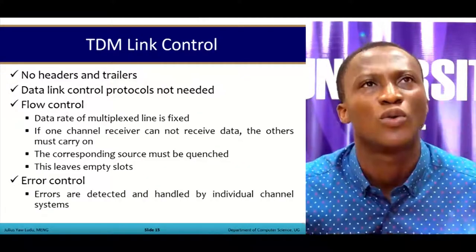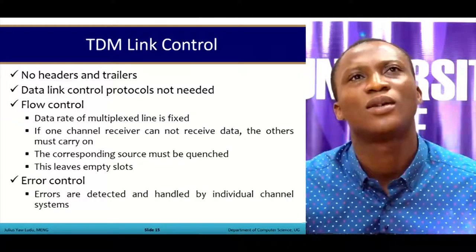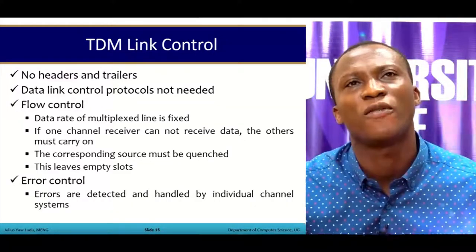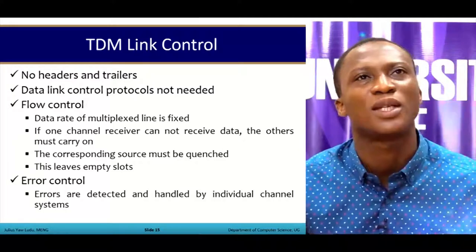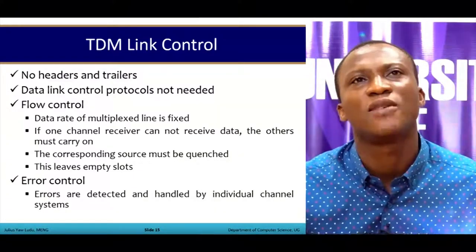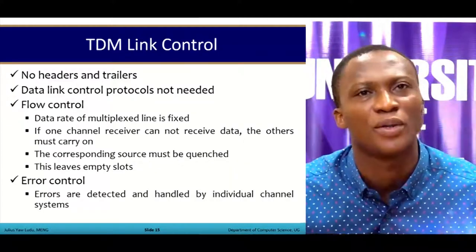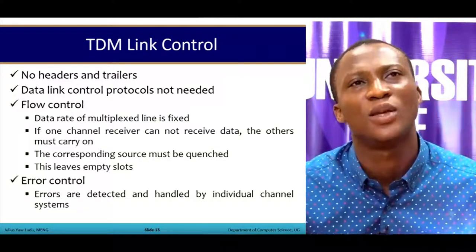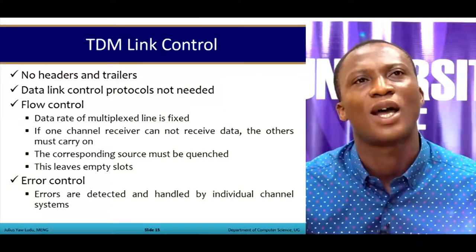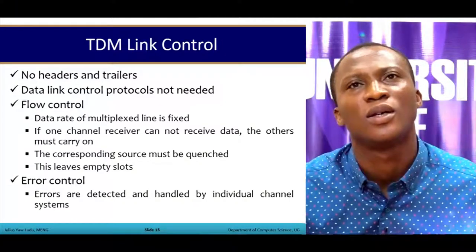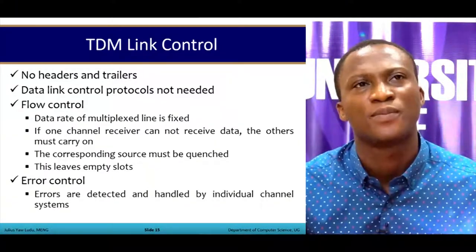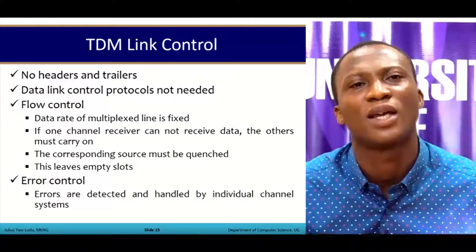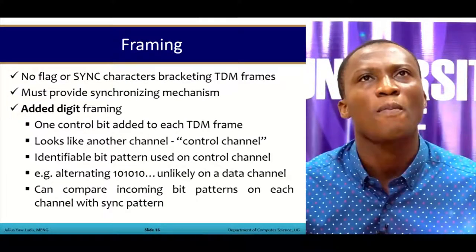With TDM link control, there are no headers and trailers, and data link control protocols are needed. For flow control, the data rate of a multiplexed line is fixed. If one channel receiver cannot receive data, the others must carry on; once bits are missing the time slots allocated are still used, and the corresponding source must be quenched, leaving empty slots. For error control, errors are detected and handled by the individual channel system.